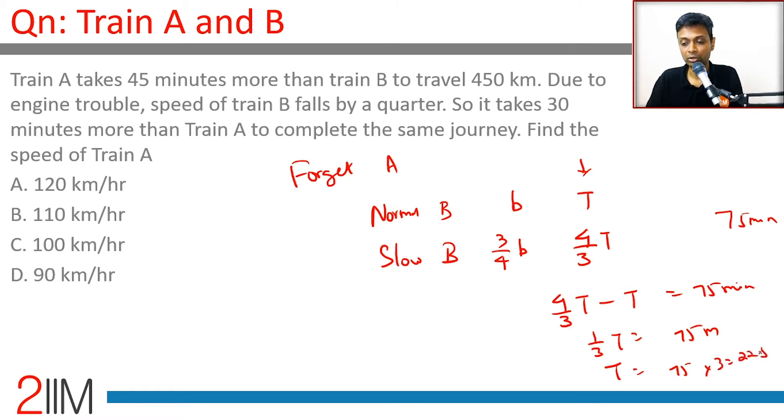Train B takes 225 minutes to travel 450 kilometers. Train A takes 45 more minutes. 225 plus 45 is 270 minutes. 270 minutes is four and a half hours.